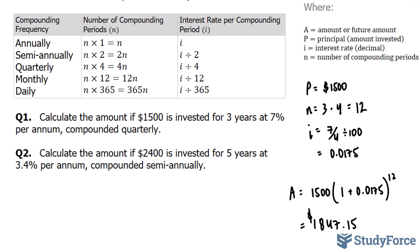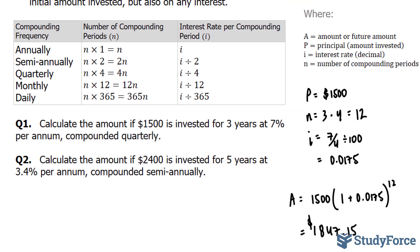Let's move on to question 2, another similar example. Here our P value is 2,400. This time it is compounded semi-annually, which means twice a year, and it's for 5 years. So n is 5 times 2, which equals 10 compounding periods.